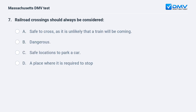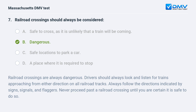Railroad crossings should always be considered: a. safe to cross, as it is unlikely that a train will be coming. b. dangerous. c. safe locations to park a car. d. a place where it is required to stop. Answer: b. dangerous. Railroad crossings are always dangerous. Drivers should always look and listen for trains approaching from either direction. Always follow the directions indicated by signs, signals, and flaggers. Never proceed past a railroad crossing until you are certain it is safe to do so.